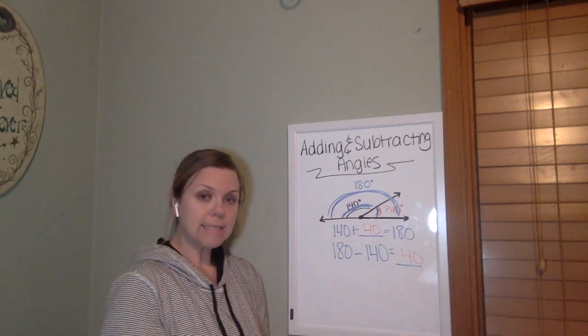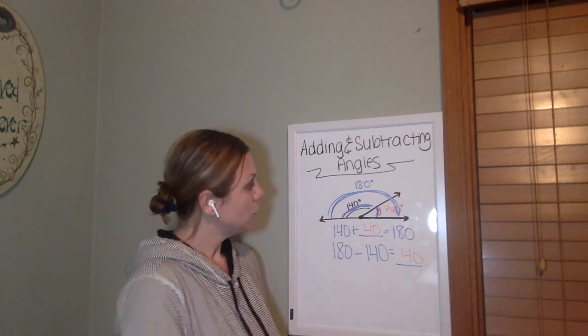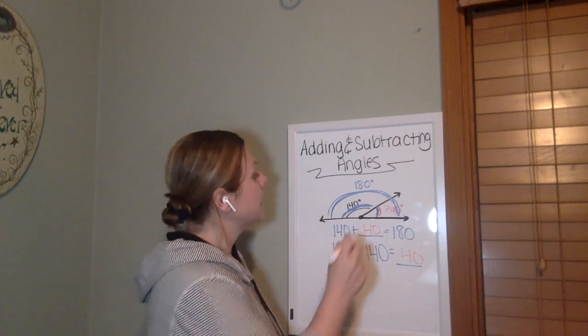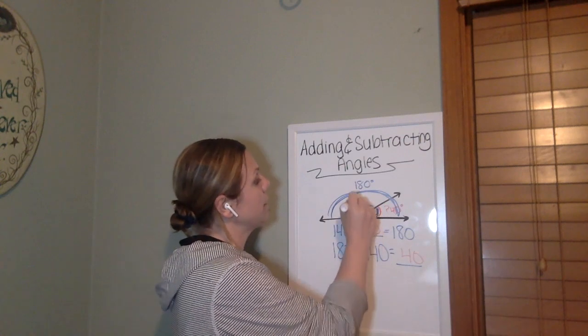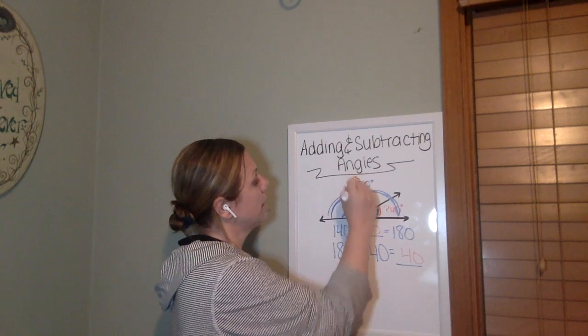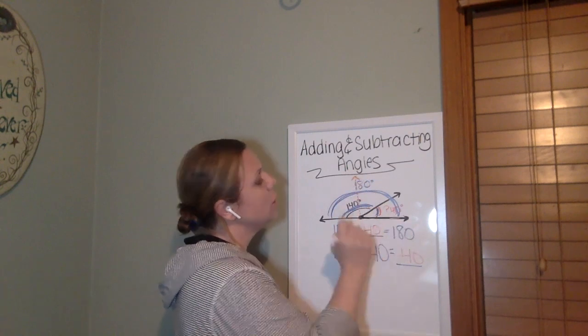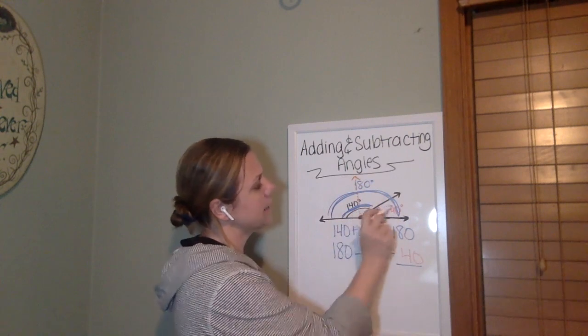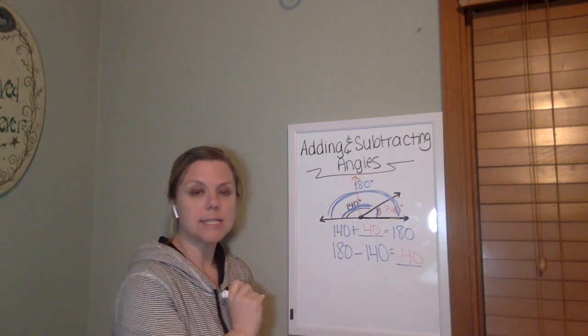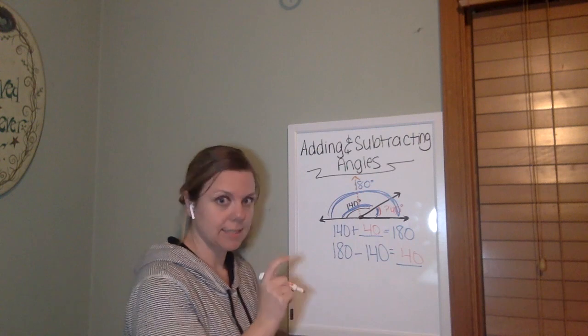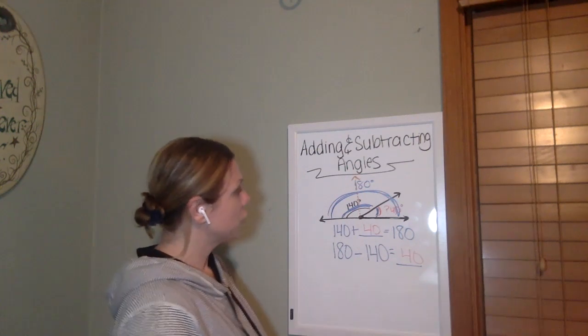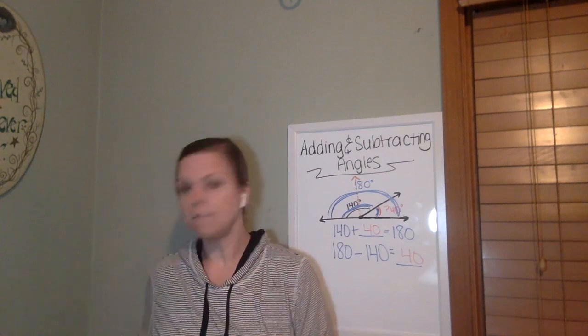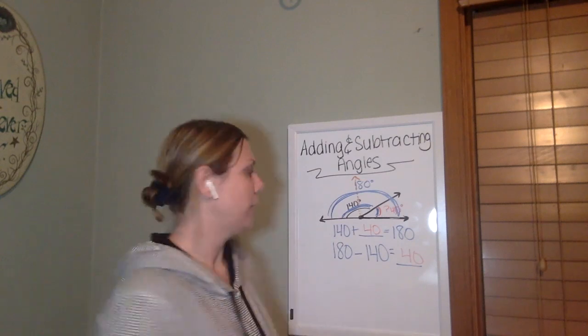Now I need to think about if that makes sense. So I also know that 90 degrees is about here, right? So this would be about 90. So does it make sense that 40 would be a little bit less than half and would fall right there at 90? Does that also make sense? It does. So by knowing about my straight angles and my right angles, I can use that information to find out my unknown angles.